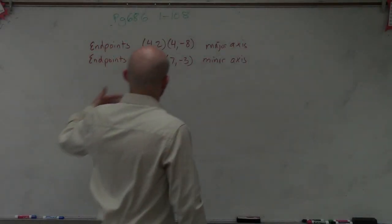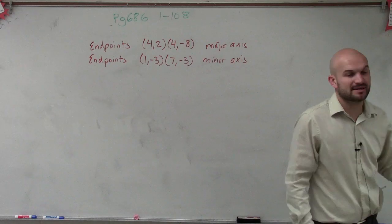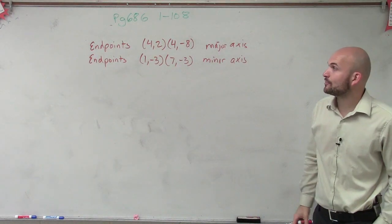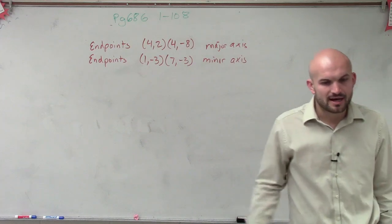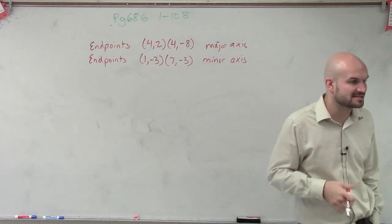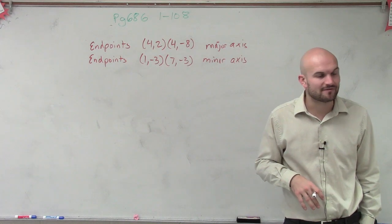We're given endpoints (4,2) and (4,-8) on the major axis, and we're also given endpoints on the minor axis. The question is asking us to write the equation for the ellipse that satisfies that set of information.